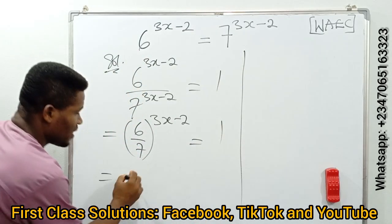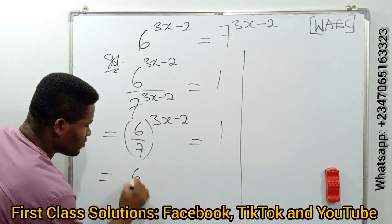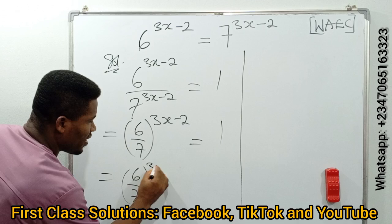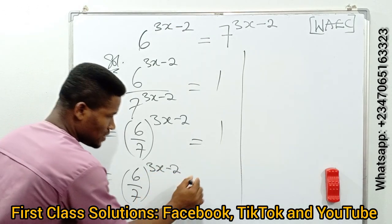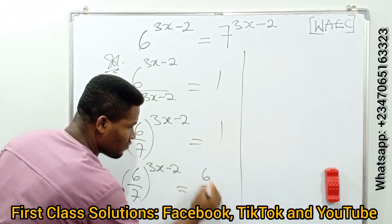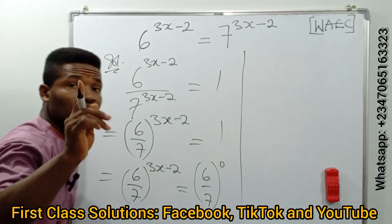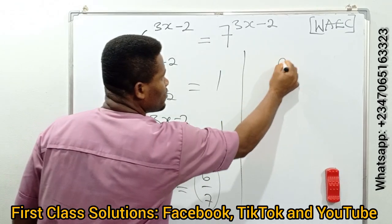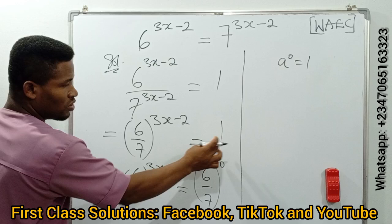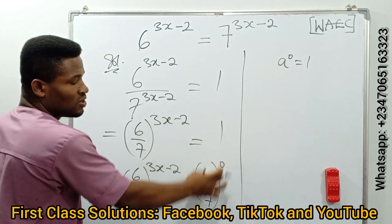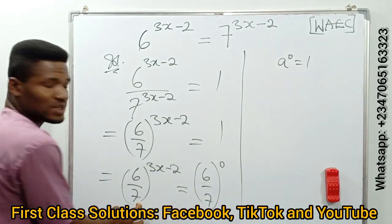So in this case, we can have (6/7)^(3x-2) equal to, looking at this base here, (6/7)^0, according to the laws of indices. Anything raised to power 0 is equal to 1, so it's assumed that 6/7 was raised to power 0 to give us 1. You have to bring it down here to have similar bases.